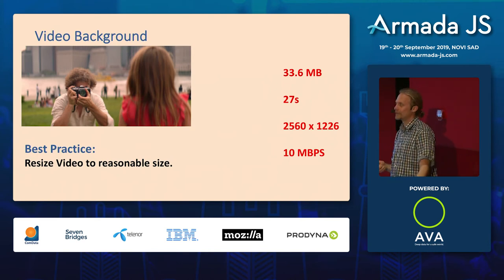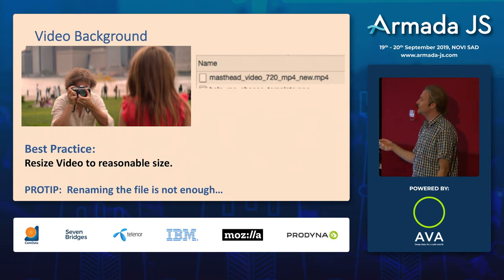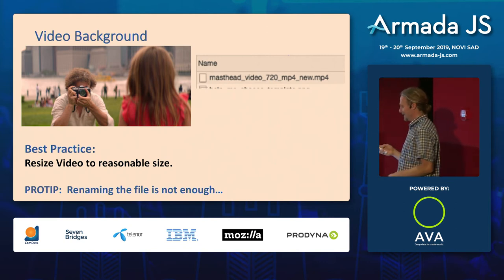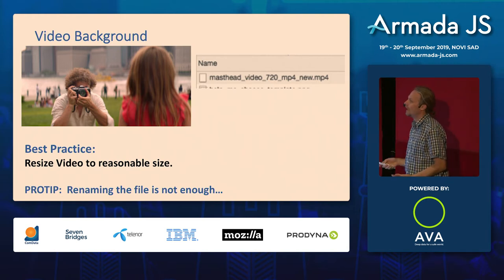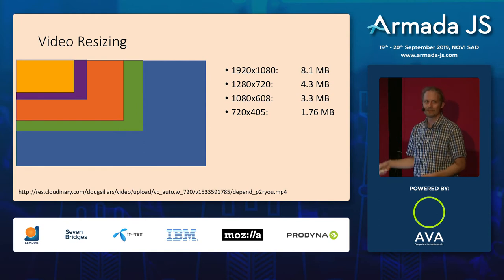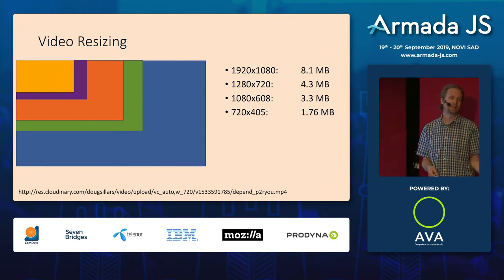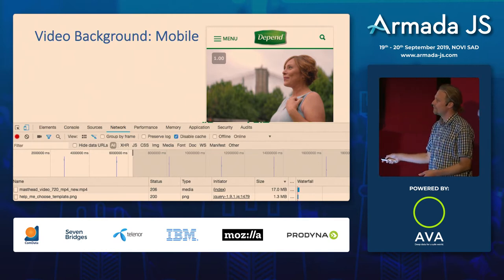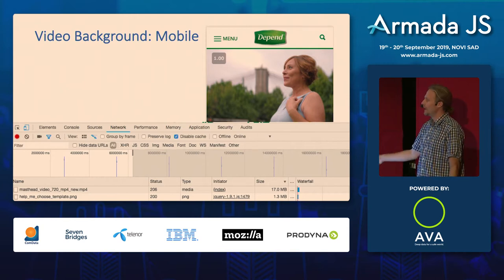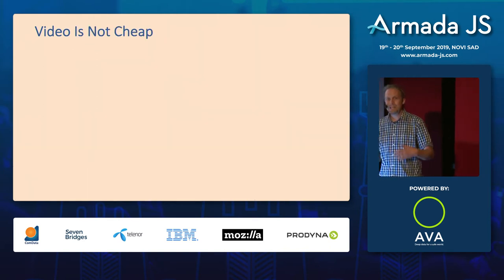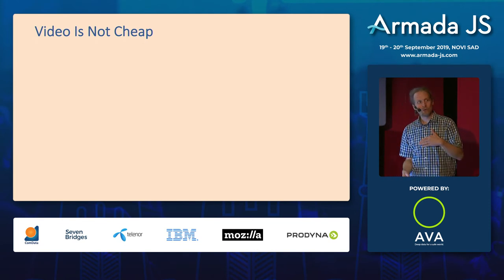You should always resize your video to something reasonable. Pro tip: renaming a file '720p' doesn't actually re-encode it to 720p. I uploaded this to Cloudinary — at 1080p it became 8 megabytes, at 720p it became 4 megabytes. That's much more reasonable than 33 megabytes. Chrome actually gave up trying to download it on mobile after 17 megabytes of a video that was never even seen.